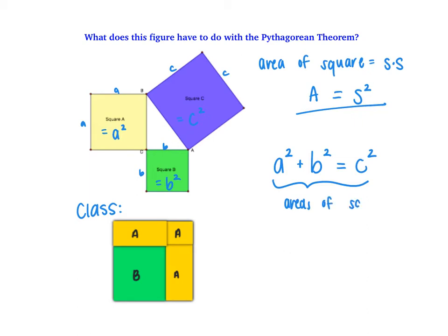The thing to remember about this diagram is that the areas of those squares are those side lengths squared. If I'm talking about the area of square A, I know that's a squared. So when you see this, it's going to be Pythagorean Theorem: a squared plus b squared equals c squared.